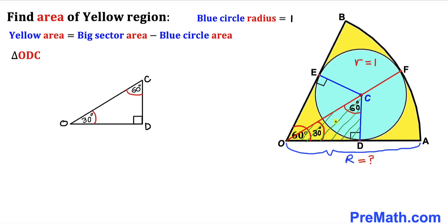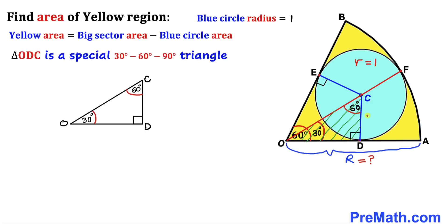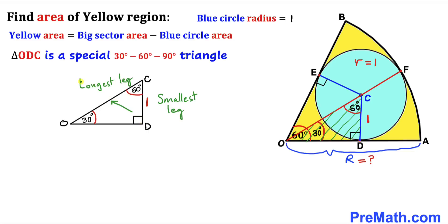Focusing on triangle ODC, we can see it is a special 30-60-90 degree triangle. The radius of the blue circle is 1, so CD = 1. The 30-degree angle is the smallest angle, so its opposite side is the smallest leg. The 90-degree angle is the largest, so its opposite side is the longest leg. In a 30-60-90 triangle, the longest leg is twice the smallest leg, so if the smallest leg is 1, the longest leg is 2.